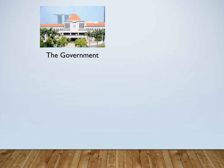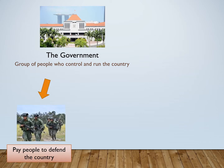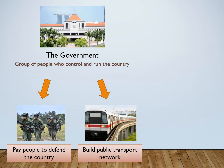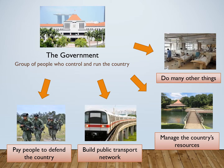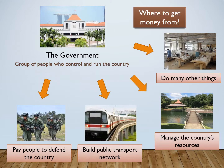This is the government. The government is a group of people who control and run the country. To do that, they need to pay people to defend the country, build a public transport network such as the MRT train, manage the country's resources such as reservoirs, and do many other things. But to do all of these things, it needs money. So where does the government get money from?